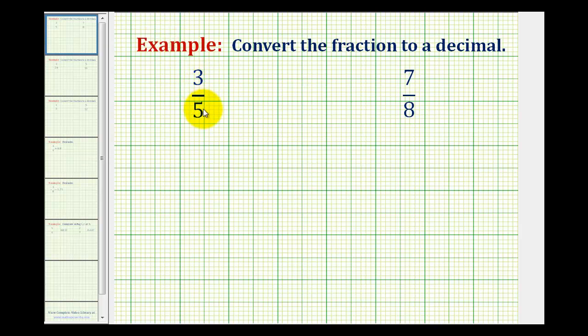Looking at this first example of 3/5, notice how we can write this as a fraction with a denominator of 10 by multiplying both the denominator and the numerator by 2. So this would be 6 over 10 or 6 tenths, which as a decimal is just 0.6.